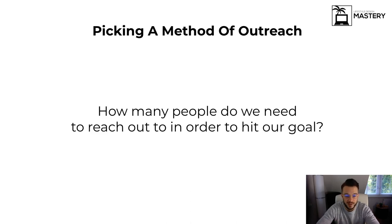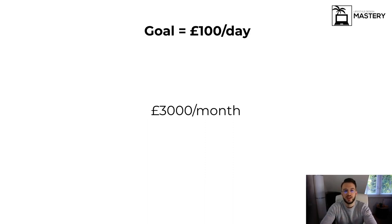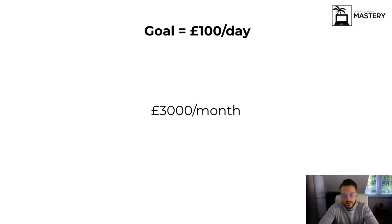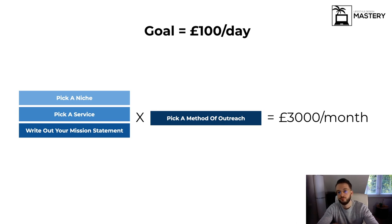Now we need to figure out: how many people do we need to reach out to in order to hit our goal? Our goal is a hundred pounds a day — or let's make it easier: three thousand pounds a month. Thirty days a month, three thousand a month, a hundred a day. That is the end goal. We've picked a niche, a service, written our mission statement, decided on a method of outreach — and we're going to use that to accumulate three thousand pounds a month.